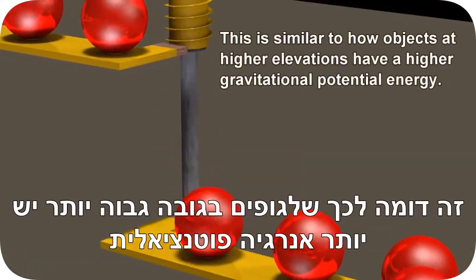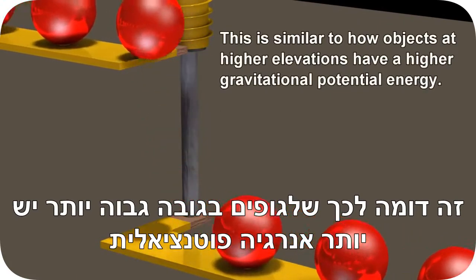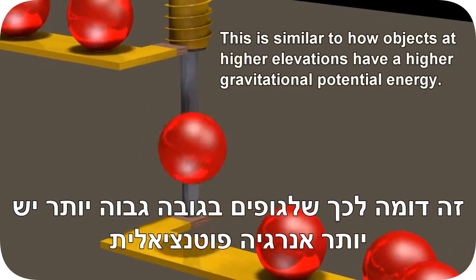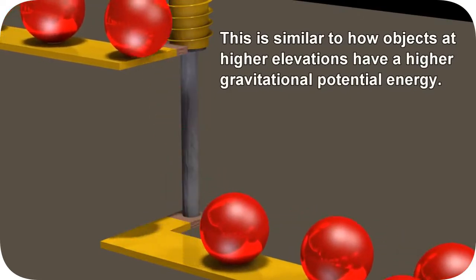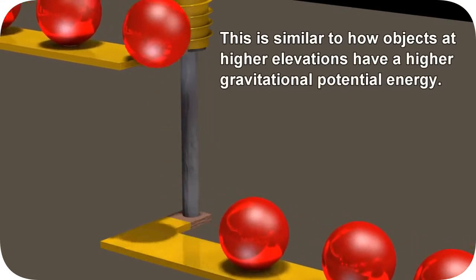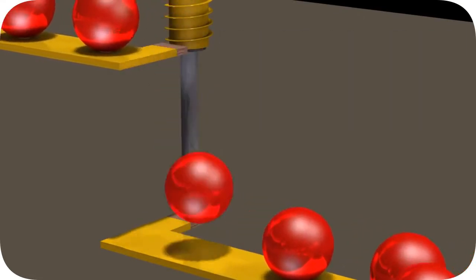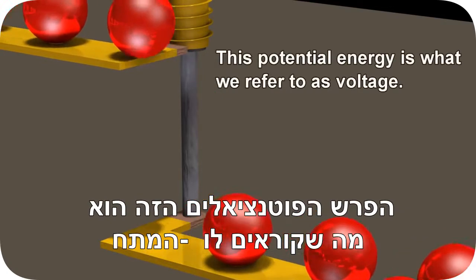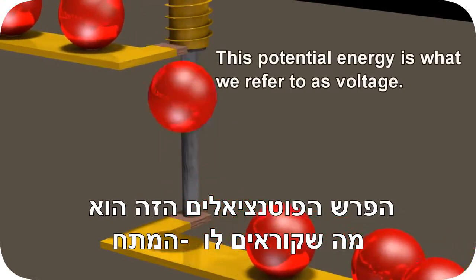This is similar to how objects at higher elevations have a higher gravitational potential energy. This potential energy is what we refer to as voltage.